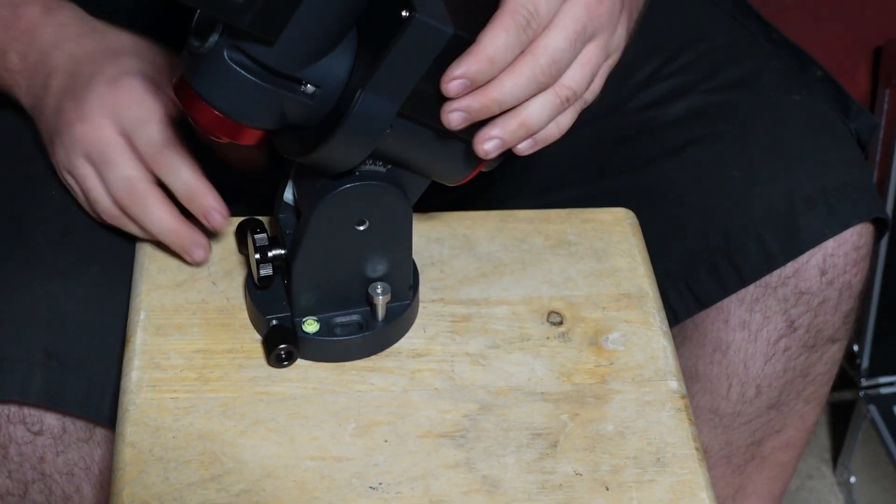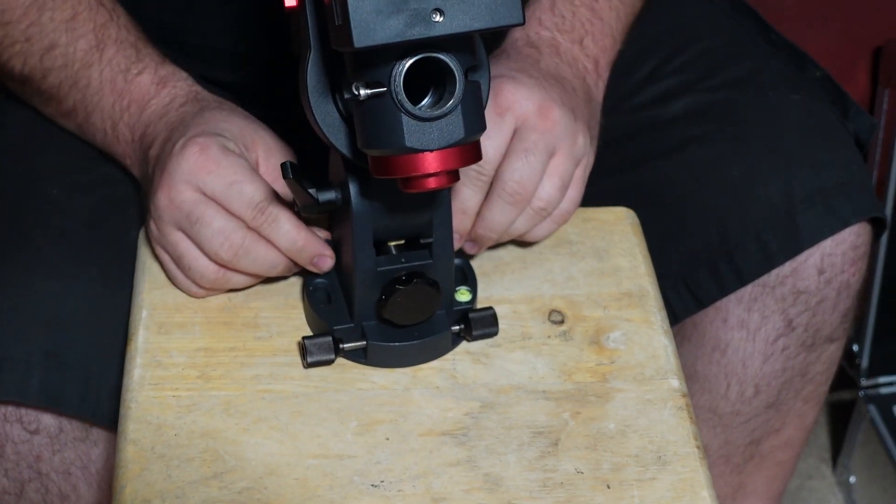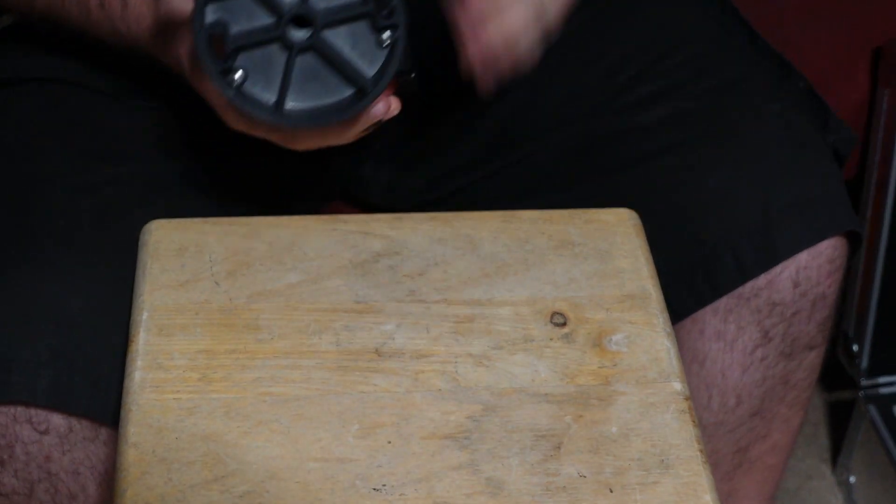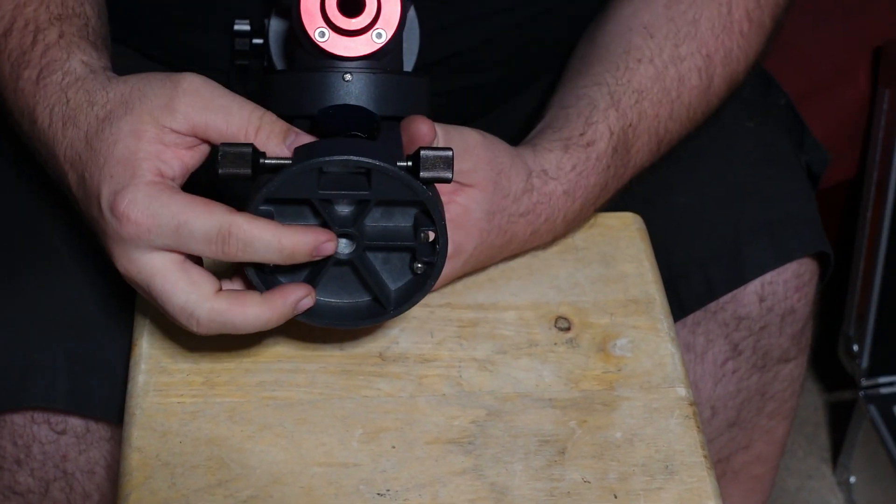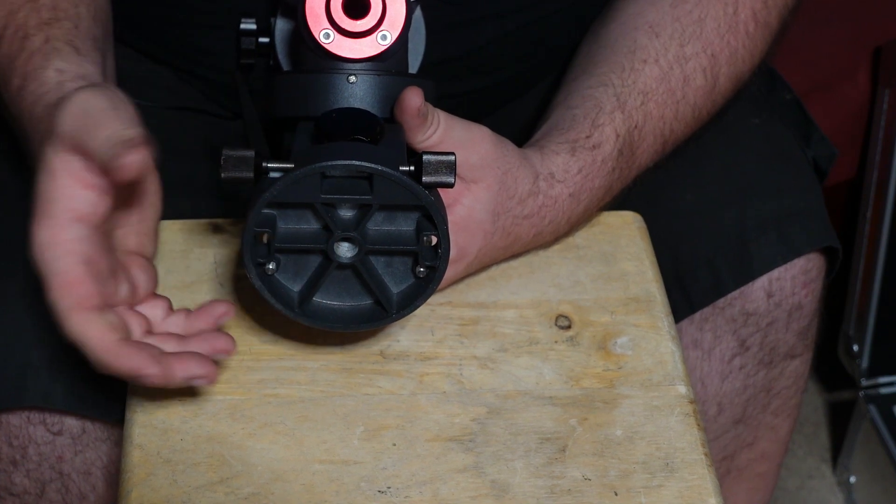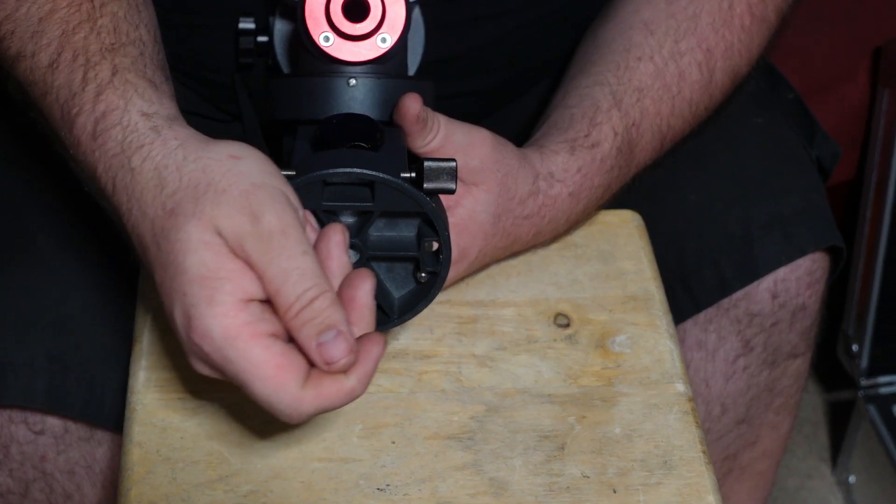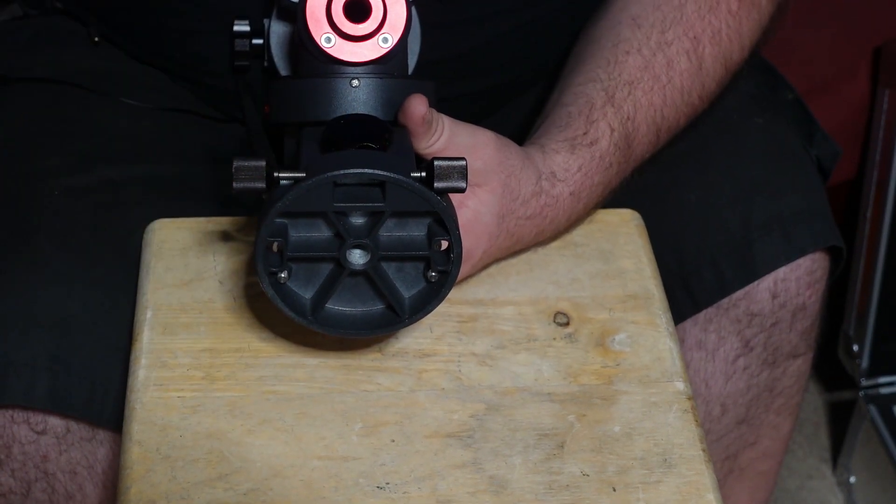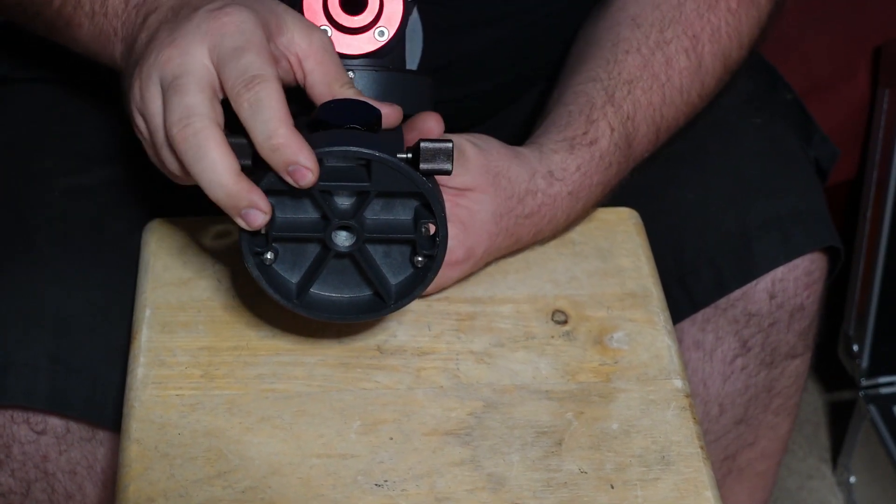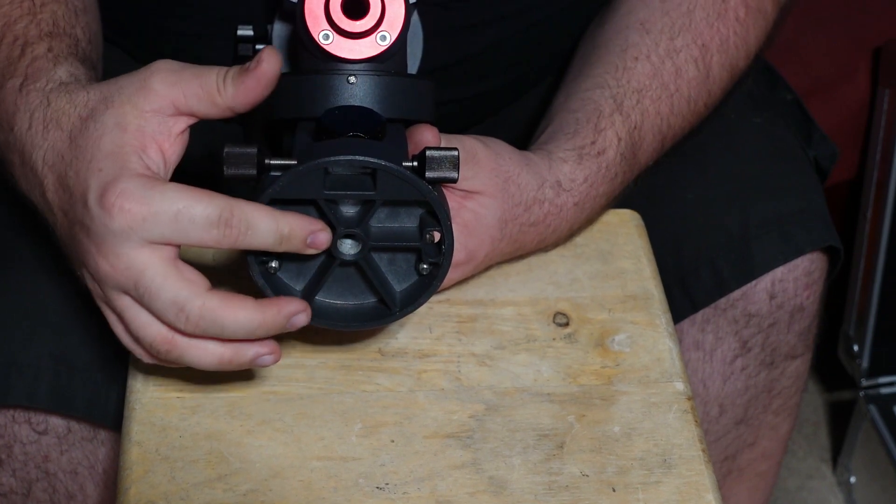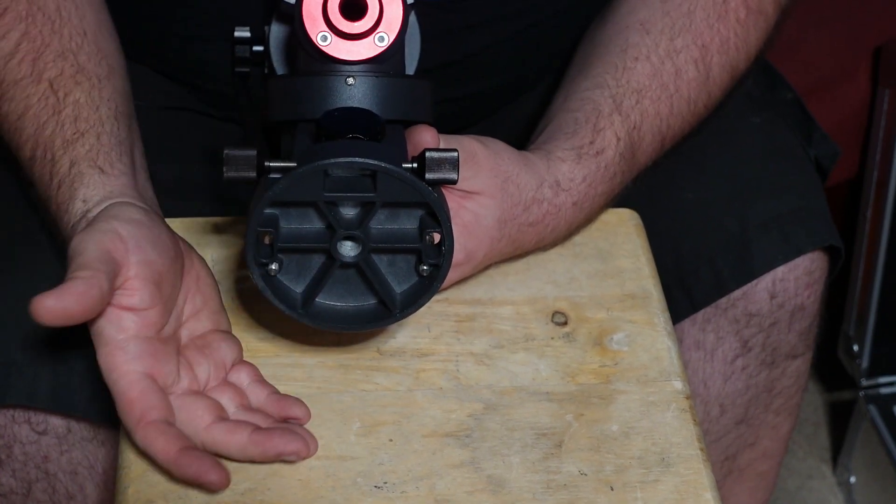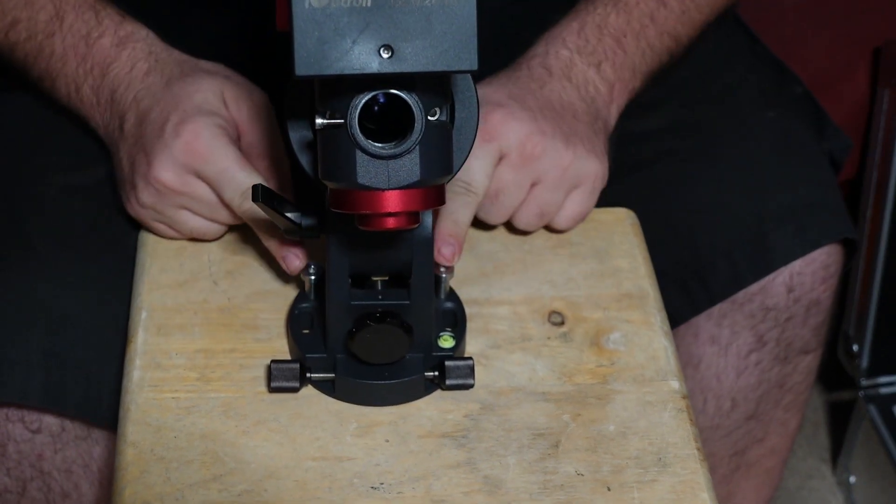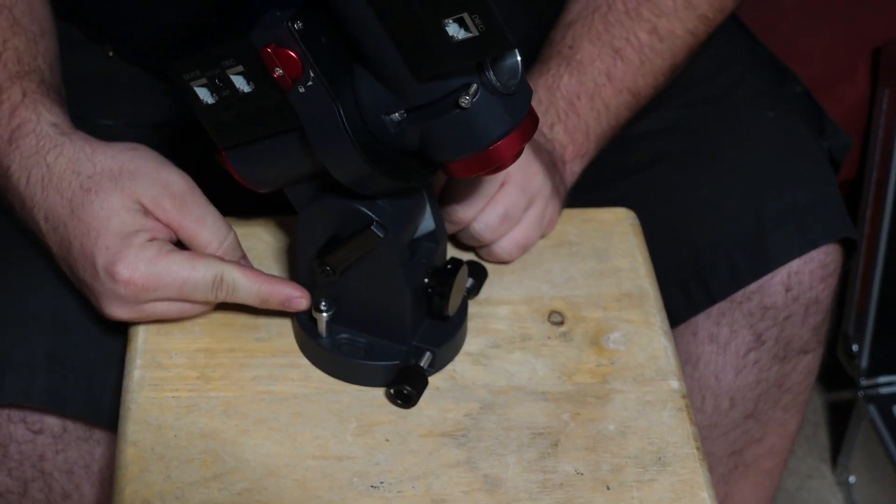And then you have these bolts right here. So on most mounts you would have on the bottom right here a hole that would have a bolt on your mount that you would push up into the hole and then you would tighten, and that's what would hold the mount to the tripod. Well, iOptron's a little bit different. There is a hole here but the bolt doesn't screw in there.